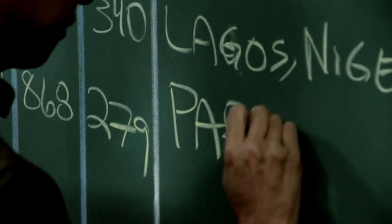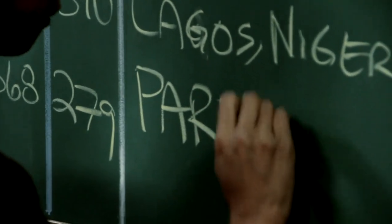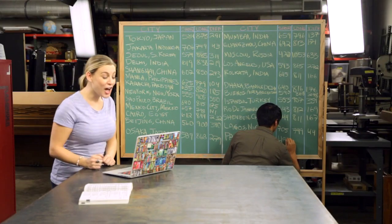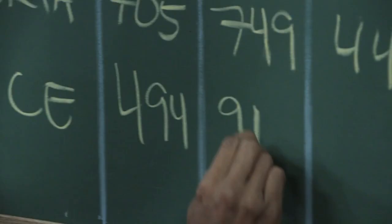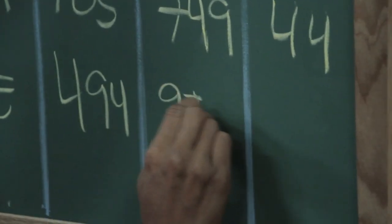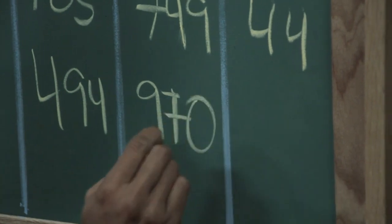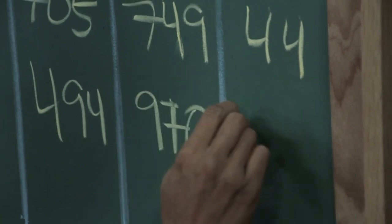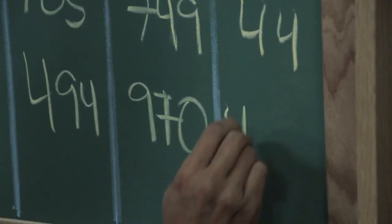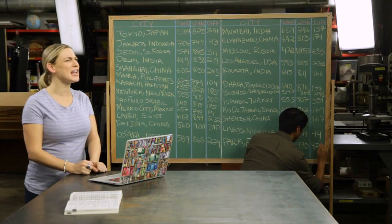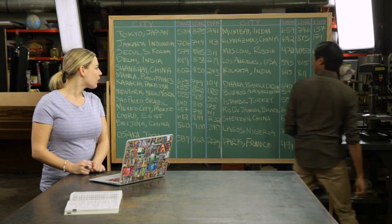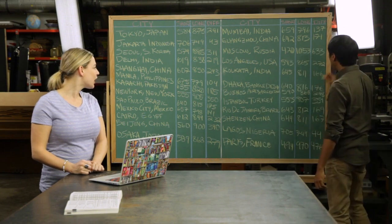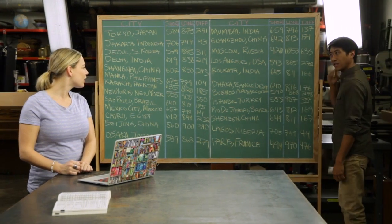Paris: the shortest day is 494 minutes, the longest is 970 minutes. That's a difference of 476 minutes — almost eight hours. That's almost twice as much as here in Los Angeles.